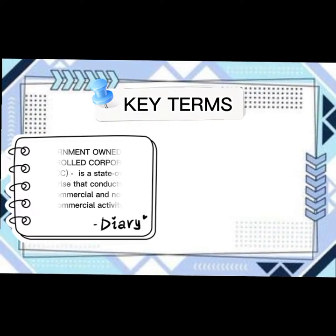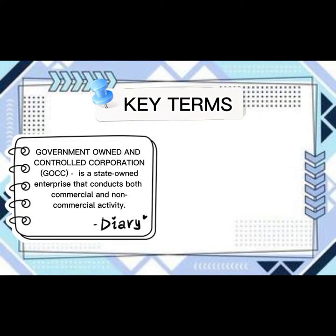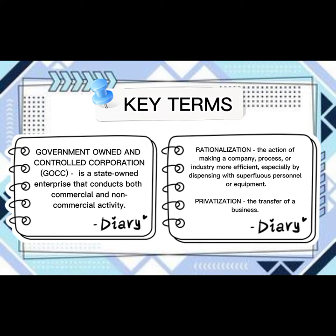Key Terms. Government-owned and controlled corporation or GOCC is a state-owned enterprise that conducts both commercial and non-commercial activity. Rationalization is the action of making a company, process, or industry more efficient, especially by dispensing with superfluous personnel or equipment. Privatization is the transfer of a business. Those are the most important terms that we will encounter on this topic.